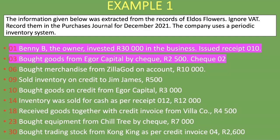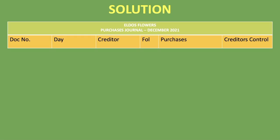On the 6th, merchandise was bought from Zilla God on account for 10,000 rand. This does go into the purchases journal because we're buying merchandise on account — on credit. We're not given a document number, so we'll call it 01, and the day is 06.